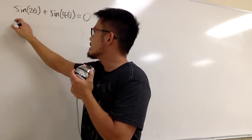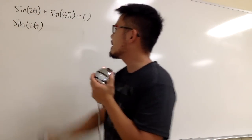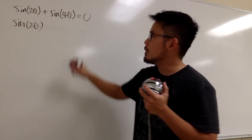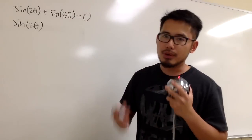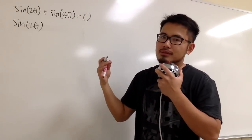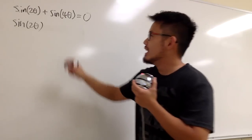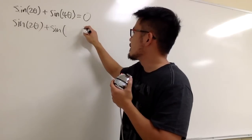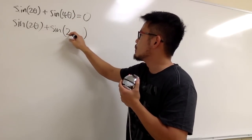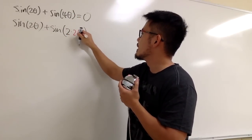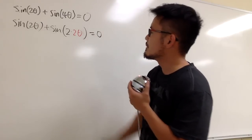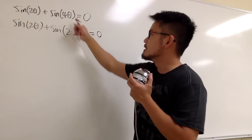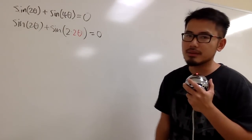Let me keep the first term as sine of 2 theta. In order to use the double angle formula, we must look at the second angle as a double angle. So 4 theta is the double angle of 2 theta. We can write this as plus sine of 2 times 2 theta, which is equal to 0.